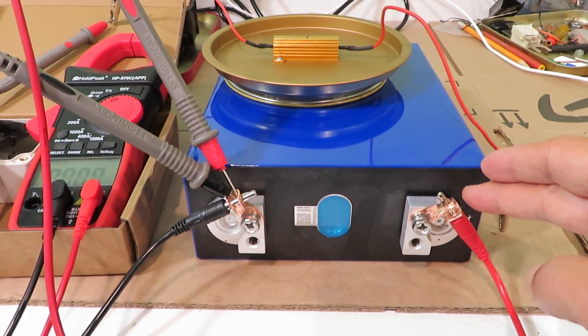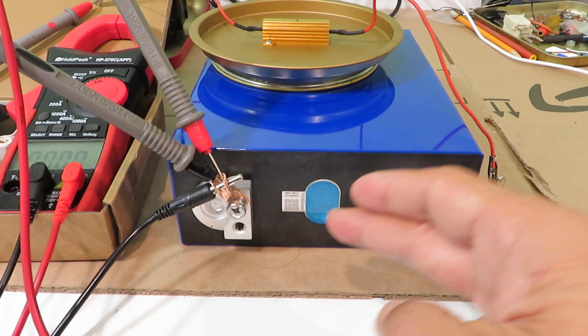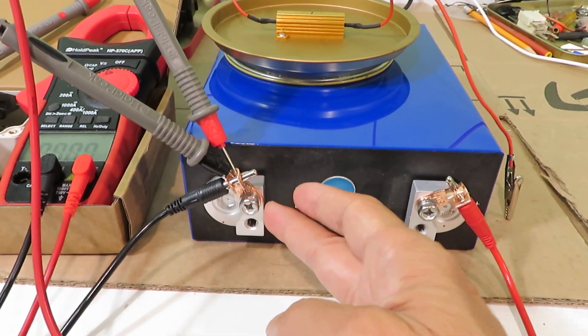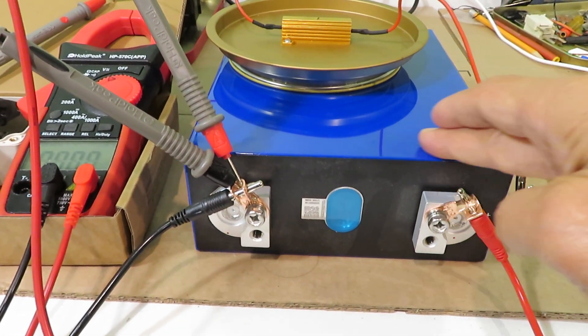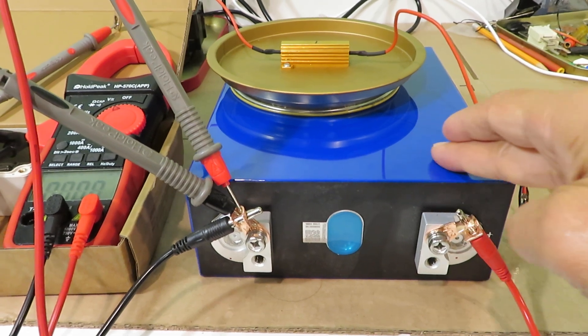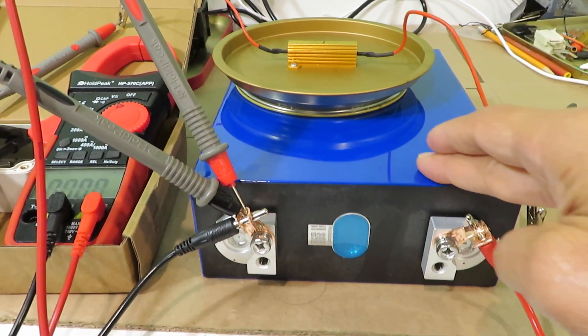It has a positive terminal, a negative terminal, and the outside is a blue color insulation sheet.